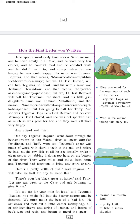And his wife's name was Teshumai Tevindrov, and that means 'lady who asks very many questions' — but we, O Best Beloved, will call her Teshumai for short. And his little girl daughter's name was Tafimai Metelumai, and that means 'small person without any manners who ought to be spanked.' But I am going to call her Taffi.